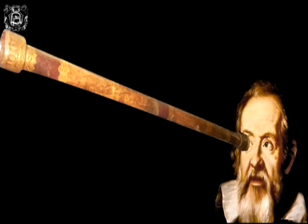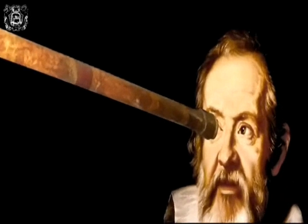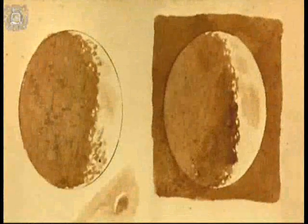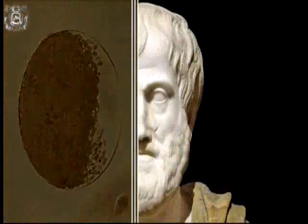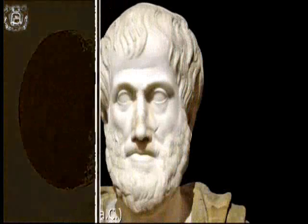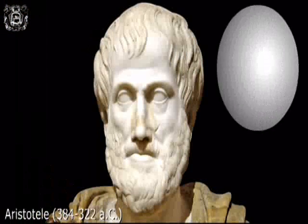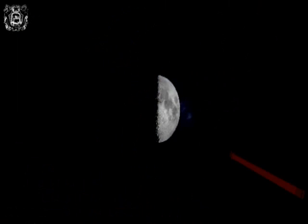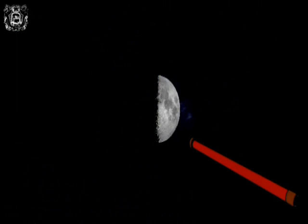Starting in autumn of 1609, Galileo conducted observations of the Moon, of which he made some drawings of striking impact. In open contrast to the Aristotelian tradition, which held that the celestial bodies are perfectly smooth and spherical, the surface of the Moon observed through the telescope showed cavities and prominences.